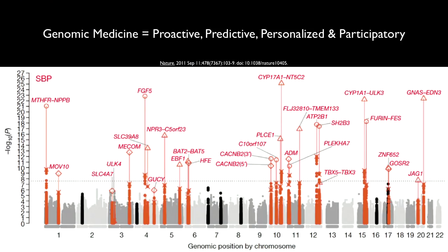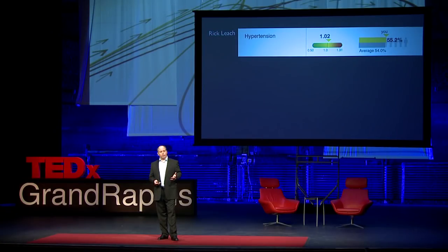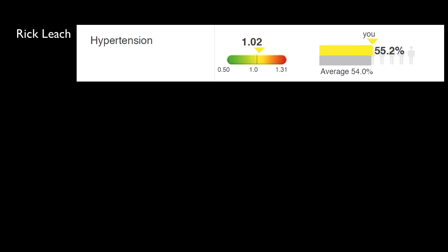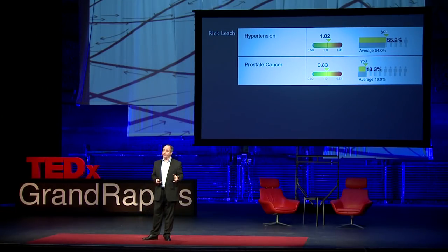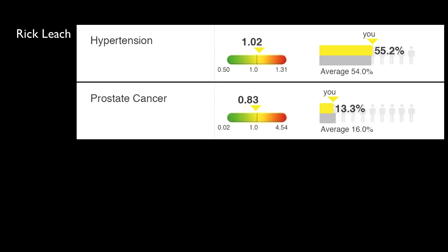Behind me is a rather complicated chart — what's important is that those symbols in red are variants that have been associated with high blood pressure. So there's a genomic architecture that we can know and test in advance. I've had this done for myself. We can summarize the results of those 29 variants as a simple chart of relative risk. I have a relative risk of one, meaning about the same chance of getting high blood pressure as other people of my ancestry — about a 55% lifetime risk. We can do this for much more than just high blood pressure, including prostate cancer. My personal risk for prostate cancer is slightly less than others of my ancestry.